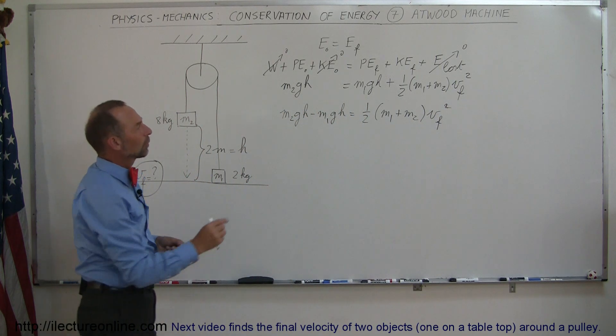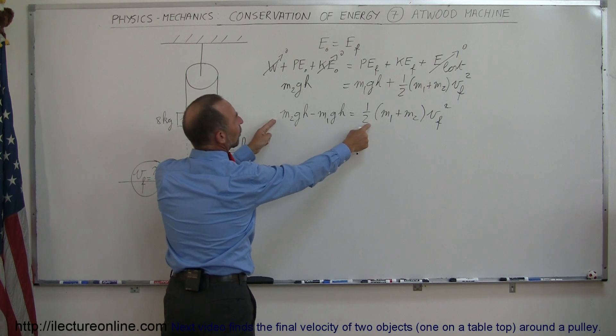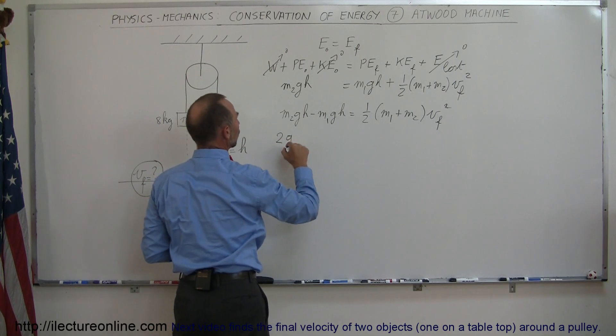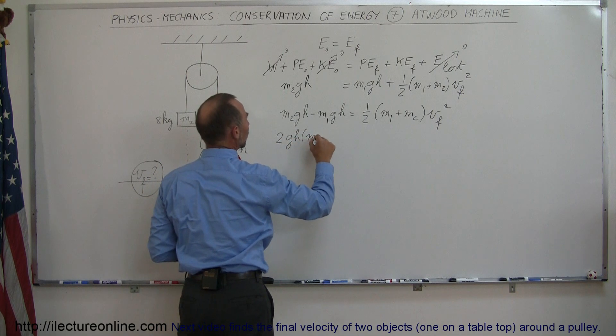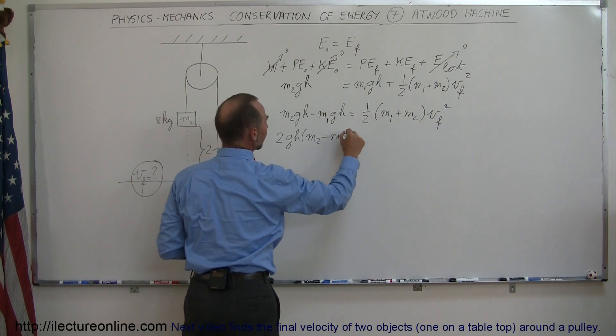So now what we're going to do is we're going to factor out a G and an H out of here and multiply both sides by 2 to get rid of the fraction here and move the 2 on that side, so we'll end up with 2GH times M2 minus M1 equals...